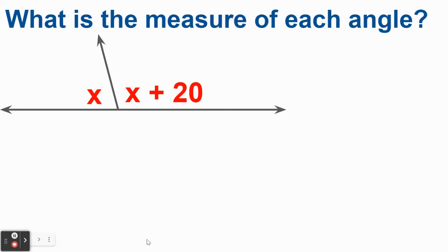Okay, so another look at one of these supplementary angles problems. Now I know that x and x plus 20. So again, all that means is that that obtuse angle is 20 degrees more than the acute angle. That's all that means, right?